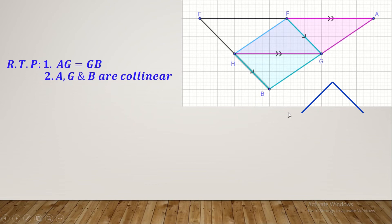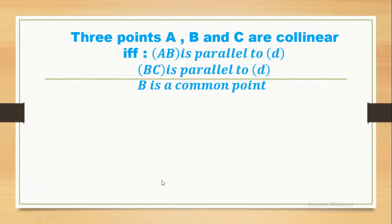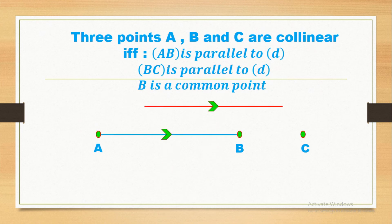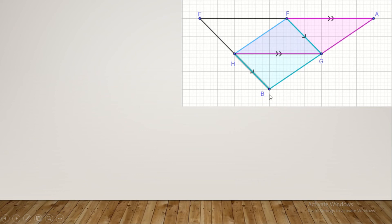To prove G is the midpoint of BA, we must prove both that BG equals GA, and that points A, G, and B are collinear. Collinear means on the same straight line. Three points are collinear when they form a straight angle of 180 degrees. Another method: if segment AB is parallel to a line D, and segment BC is also parallel to the same line D, and B is a common point, then A, B, and C are collinear.